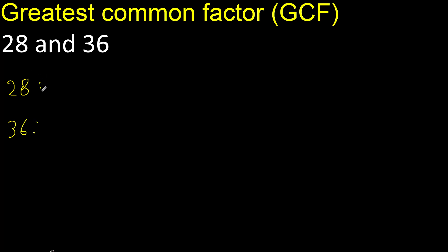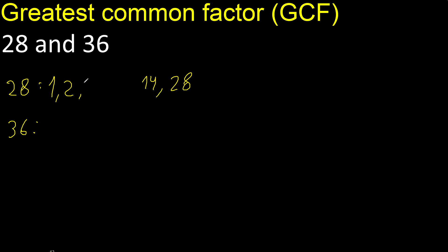Factors. Always start with 1. 28 divided by 1 is 28. Divided by 2, 14. 28 cannot be divided by 3. 4 divided by 4 is 7.